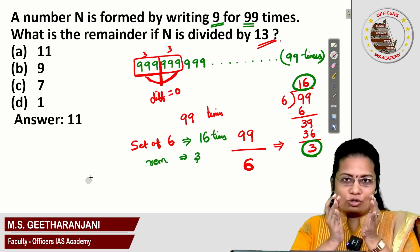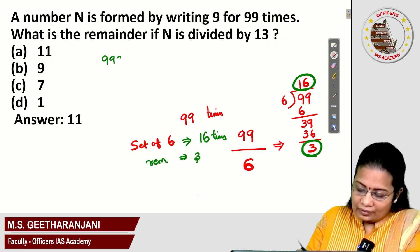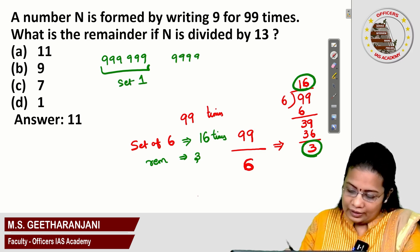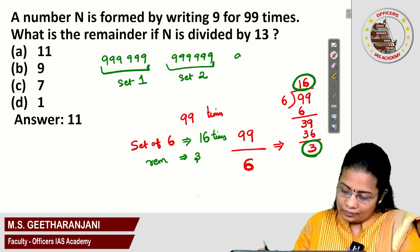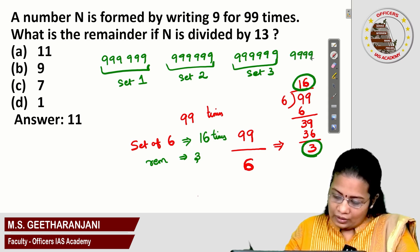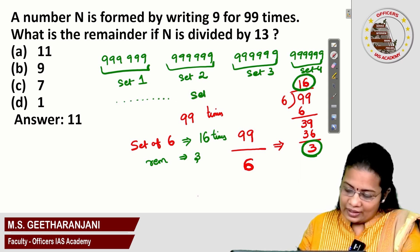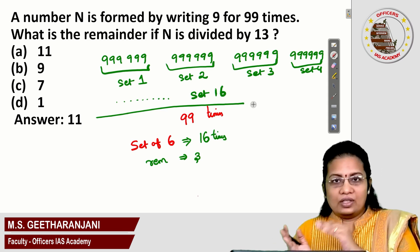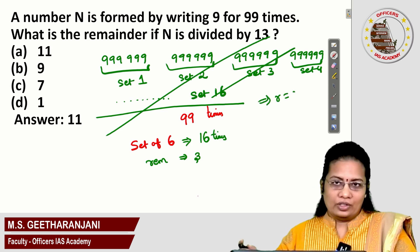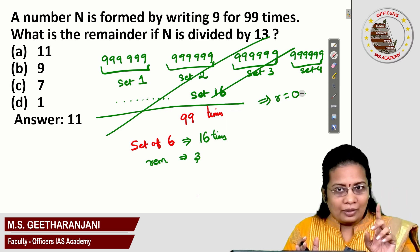After 16 sets of 9s, we will be getting an extra 3 nines. That is set 1, set 2, set 3, set 4, and so on up to set 16. For all these sets, the numbers will get cancelled with 13 and the remainder is 0. So up to 16 sets, the number is actually divisible by 13 and the remainder becomes 0.